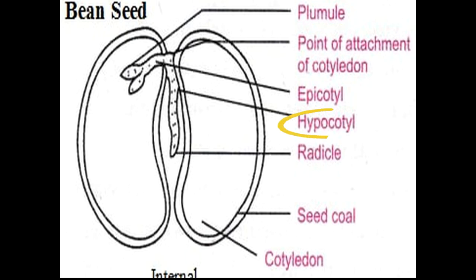Next we have the hypocotyl, which is part of the stem between the cotyledons and the root. The hypocotyl follows the plumule and cotyledons up through the soil towards the sunlight. The epicotyl is the part of the stem above the cotyledons and below the plumule. As the bean seedlings develop, the epicotyl grows and elongates in a process known as phototropism, which means growing towards light.